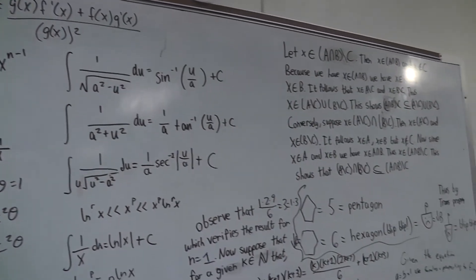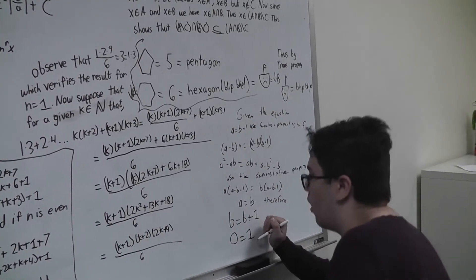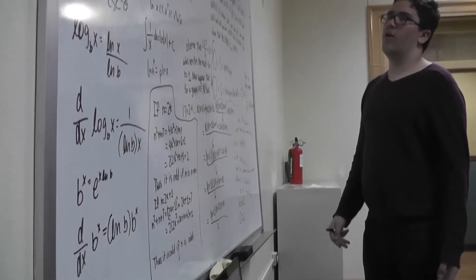So zero is equal to one. Where did I go wrong?